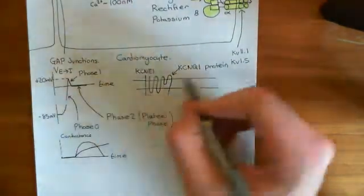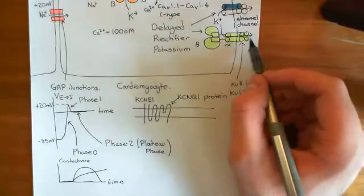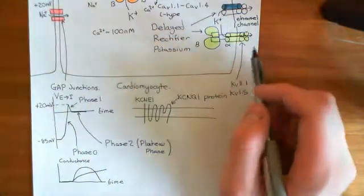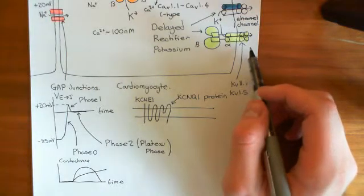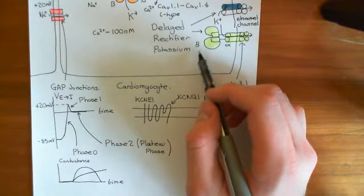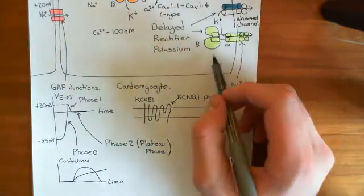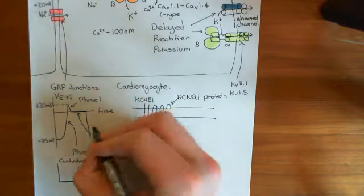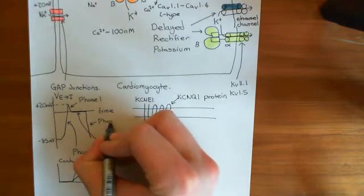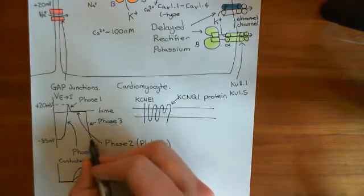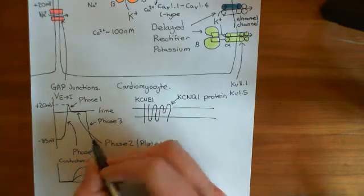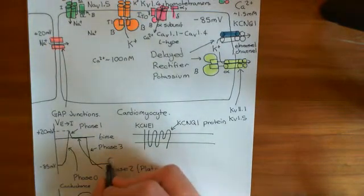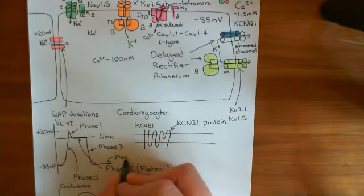What starts happening is the membrane begins repolarizing, because positive charge is moving out of the intracellular compartment into the extracellular compartment. That makes the internal electrical potential drop and the external potential rise, so the membrane potential becomes more negative — that is phase three, the repolarization phase. Then everything returns to normal: all these channels close, the leaky channels take over, and the cell returns to around minus 85 millivolts — that is phase four.